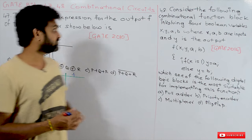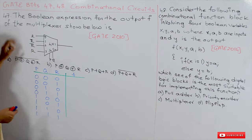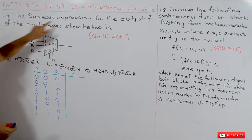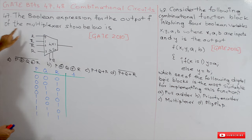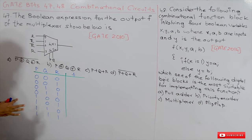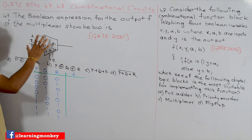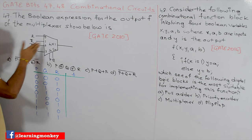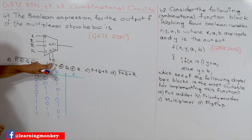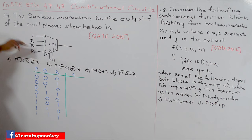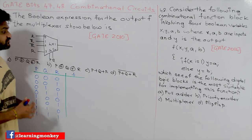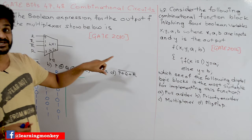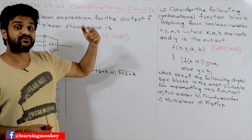Now coming to this class, we'll try to solve this bit. It was asked in GATE 2010. The question is: find the boolean expression for the output F of the multiplexer shown. Using this boolean expression, what is the function which is produced by this multiplexer using these select lines and inputs? So what is the output that is produced — that we will try to understand.